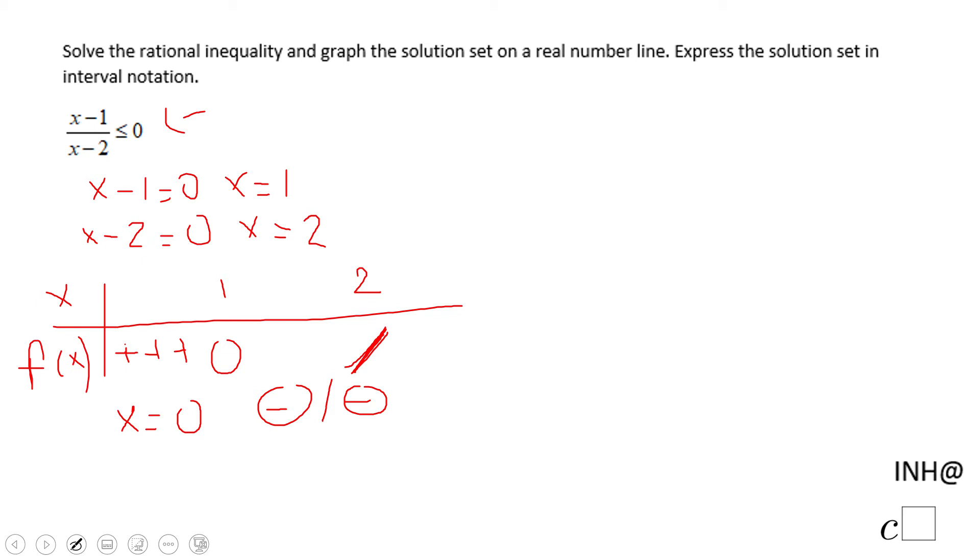Now if I go to a number between 1 and 2, what's going on? x minus 1 becomes like 1.5, which becomes positive, and x minus 2 becomes negative.